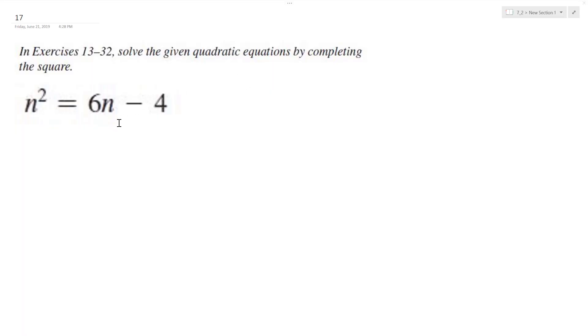Let's solve the following problem by completing the square. To do that, we want to get all the variables on one side and the constant on the other. I'm going to subtract 6n from both sides, so I end up with n squared minus 6n is equal to negative 4.